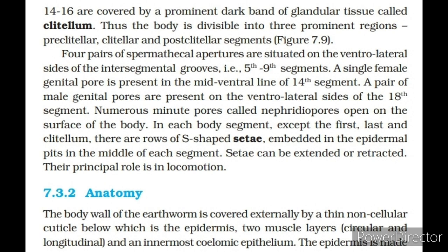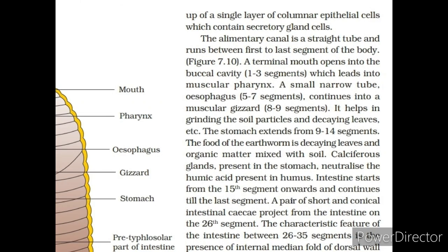Anatomy: The body wall of the earthworm is covered externally by a thin non-cellular cuticle, below which is the epidermis, then muscle layers (circular and longitudinal), and an innermost coelomic epithelium. The epidermis is made up of a single layer of columnar epithelial cells which contain secretory gland cells. The alimentary canal is a straight tube running between the first to last segment. A terminal mouth opens into the buccal cavity (segments 1–3), which leads into a muscular pharynx. A small narrow tube, the oesophagus (segments 5–7), continues into a muscular gizzard (segments 8–9), which helps in grinding soil particles and decaying leaves.